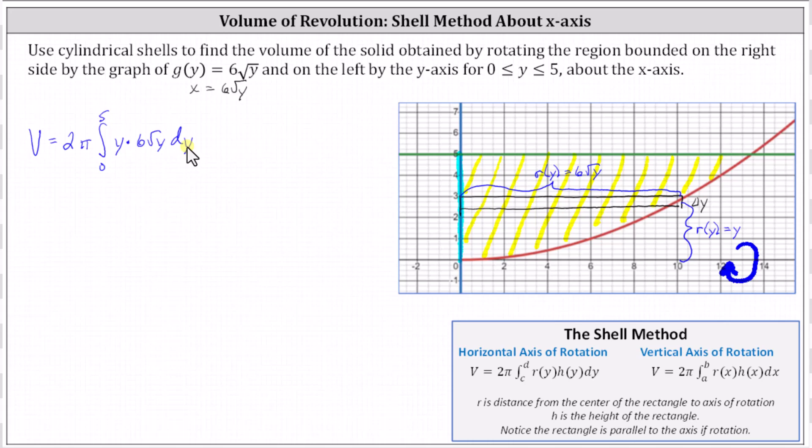Let's simplify the integrand function. We have 2π times the integral from zero to five of, recall √y equals y to the 1/2 power, and therefore the integrand function is 6y to the 3/2.